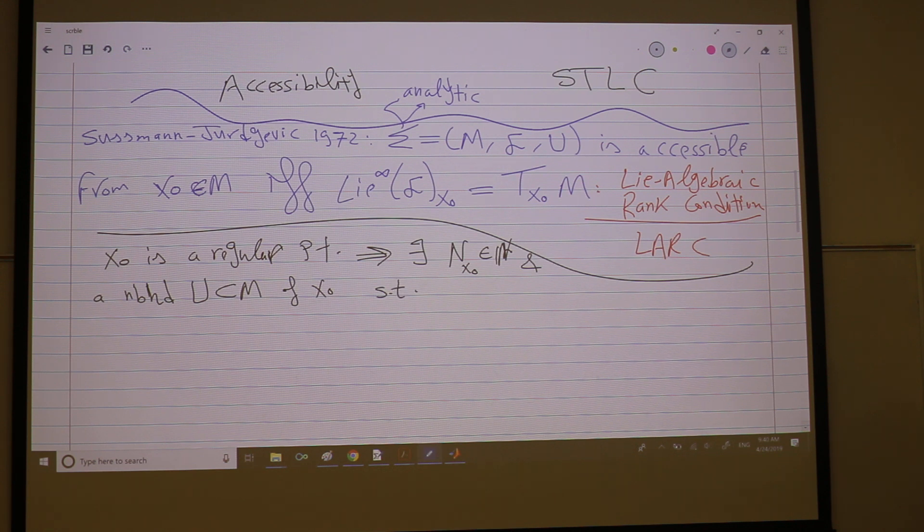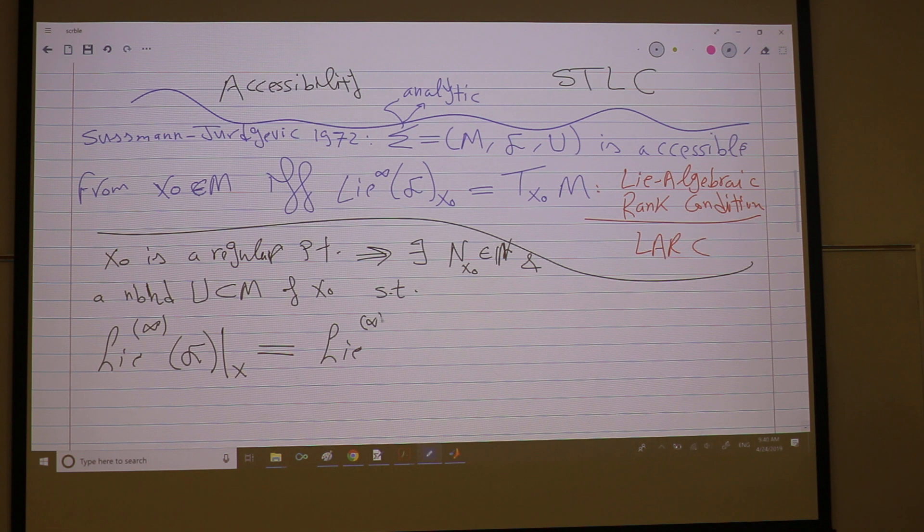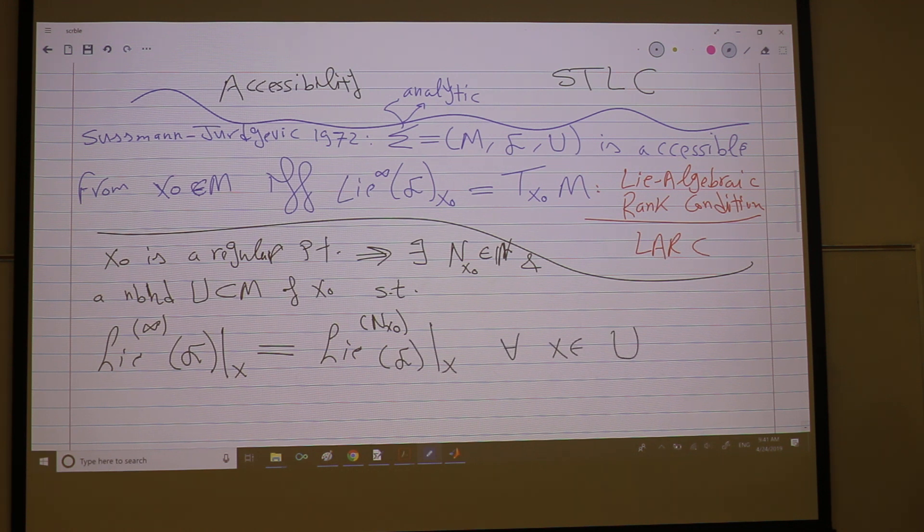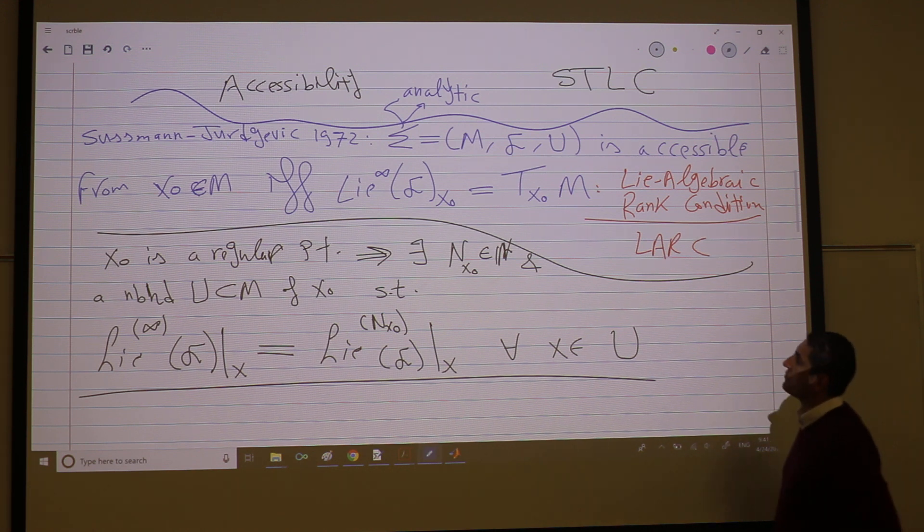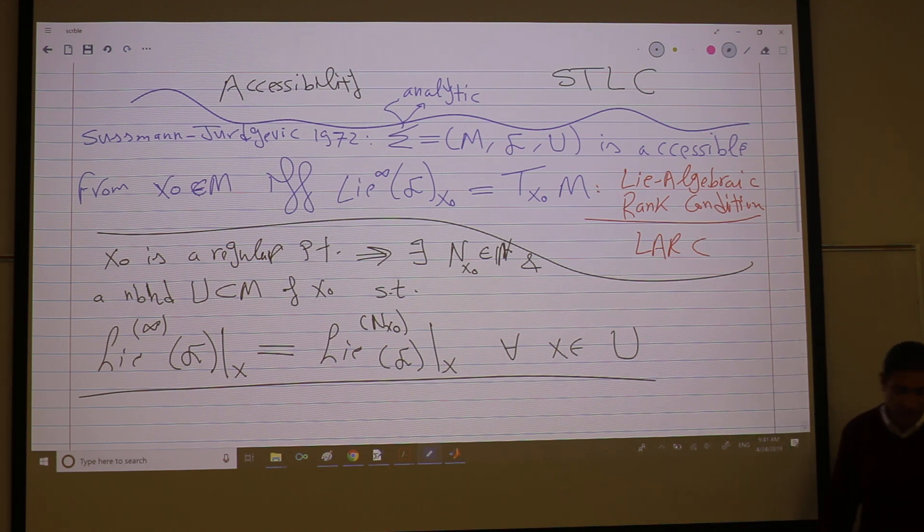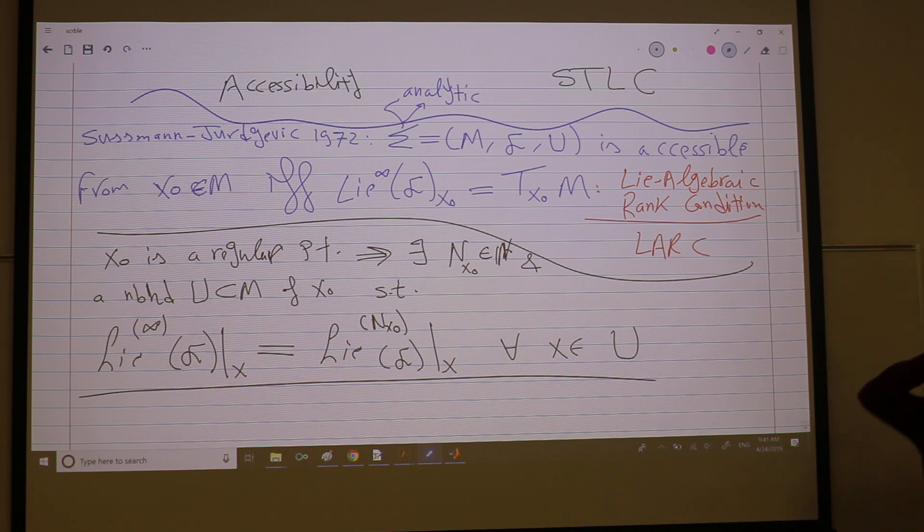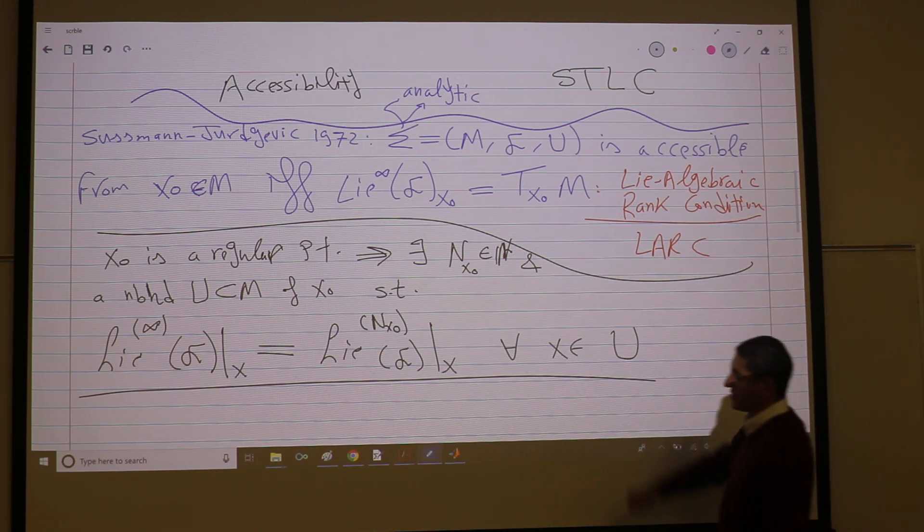Such that the Lie-infinity of your family at any x is given by the Lie-n at this x for all x in the neighborhood. So it means simply that we are sure that we will not go to infinity. We are sure that there is some n, hopefully it's not that far, it's not like 1,000 Lie brackets, but there is some finite n for which we will cover this thing.